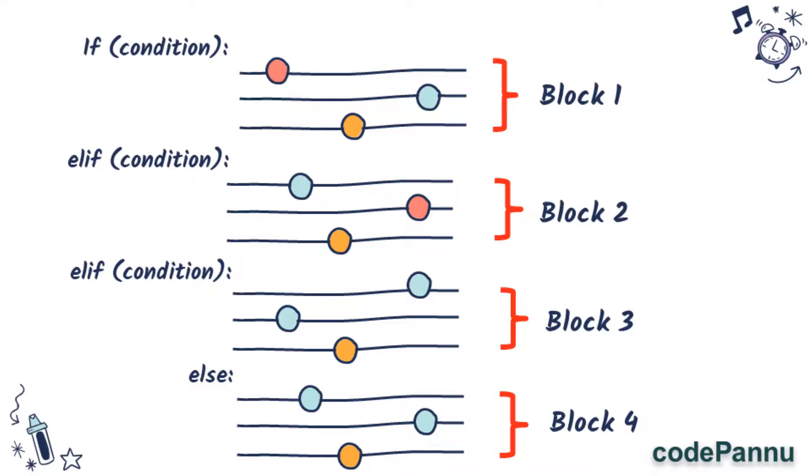So we will have one if at the beginning and one else at the bottom, and in between, depending on however many conditions we have, we can write as many elifs. That is the first one. The second thing is the correct order to write. So the correct order is: first we write the if and the condition, then we write as many elifs with condition, and finally the else without any condition.